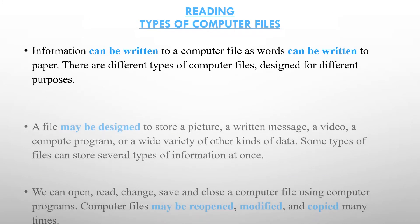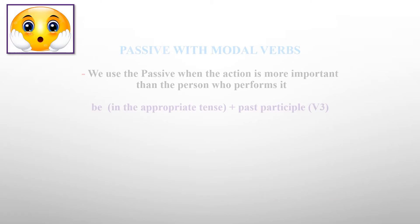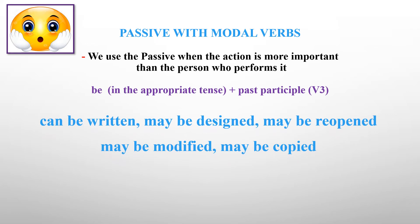Pause the presentation and read these sentences about different computer files. The words highlighted in blue, such as 'can be written' and 'may be designed', are examples of how to use passive with modal verbs. We use the passive when the action is more important than the person who performs it. We use the verb 'be' in the appropriate tense and the verb in past participle. For example: can be written, may be designed, may be recorded, may be modified, may be copied.